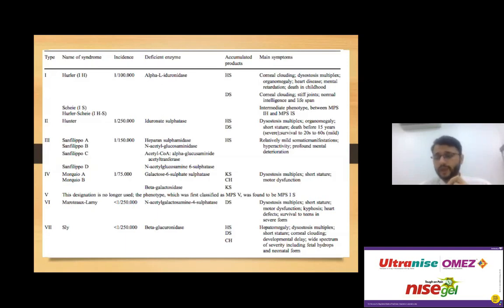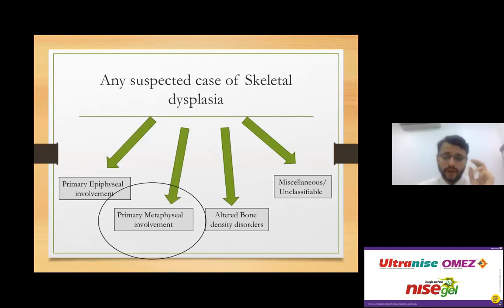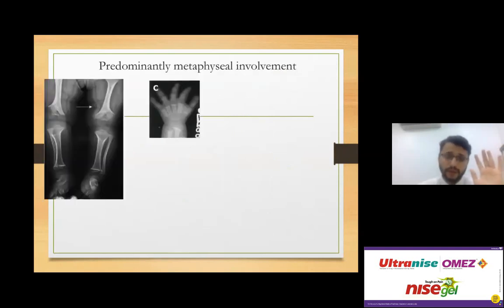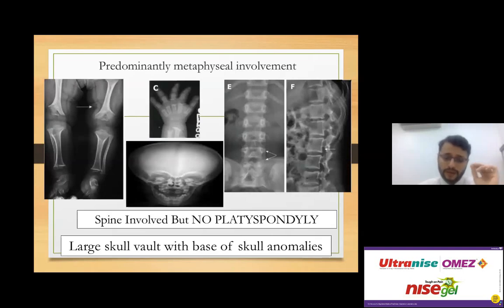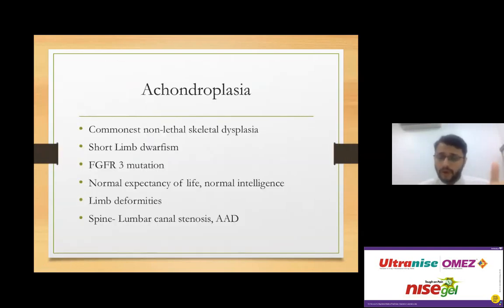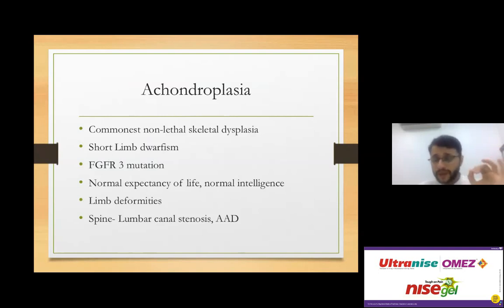For primary metaphyseal involvement, the key features are predominantly metaphyseal changes, spine involvement without platyspondyly, and a large skull with base of skull anomalies — this is achondroplasia. Achondroplasia is the commonest non-lethal skeletal dysplasia. Achondroplasts have normal life expectancy and normal intelligence, but have limb deformities and spinal issues like lumbar canal stenosis. Always screen the spine before any orthopedic intervention.